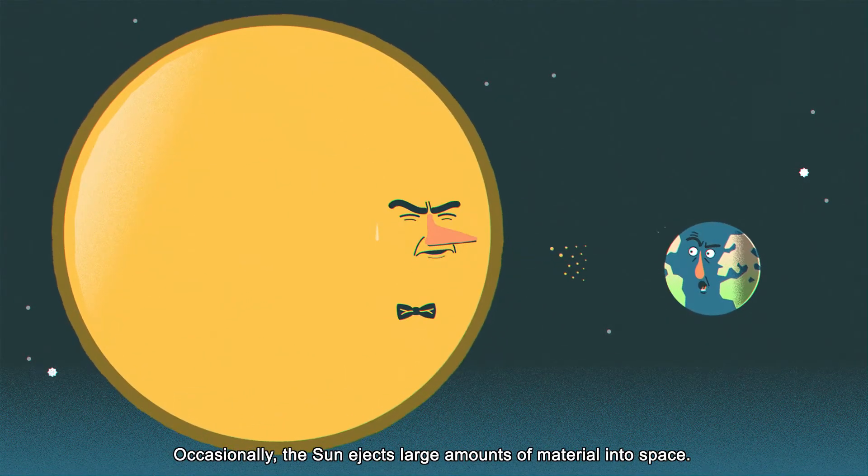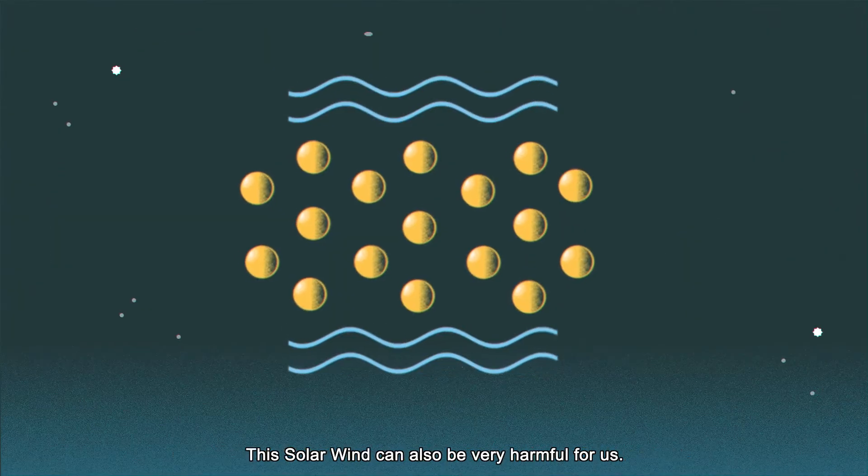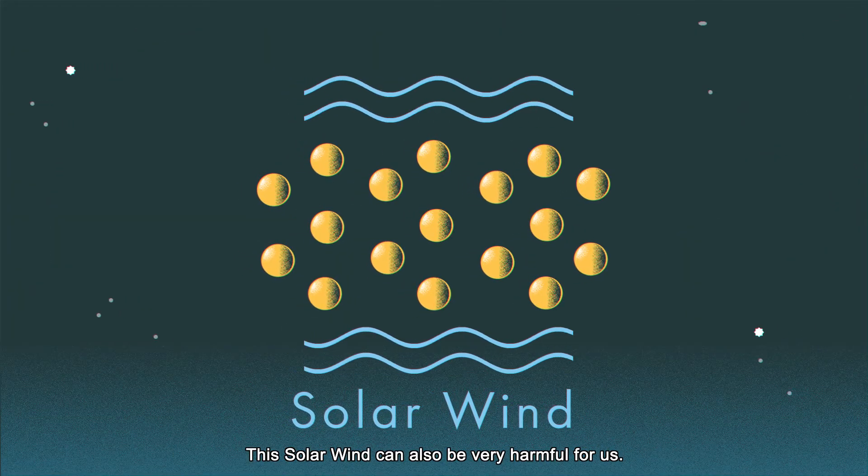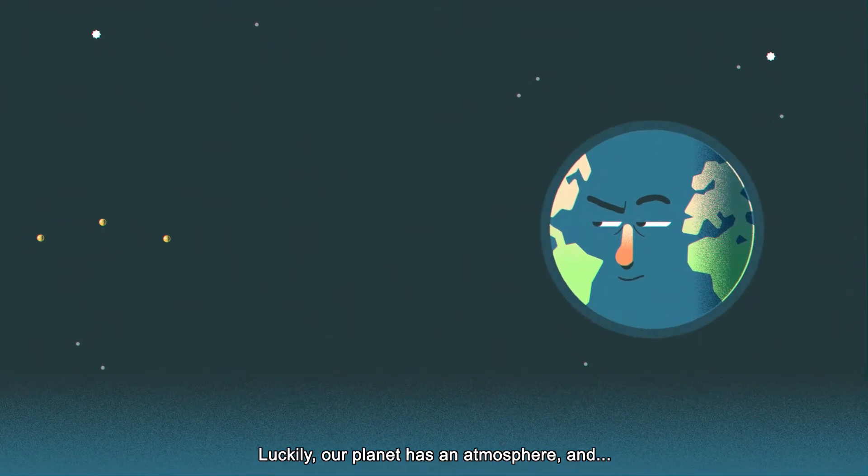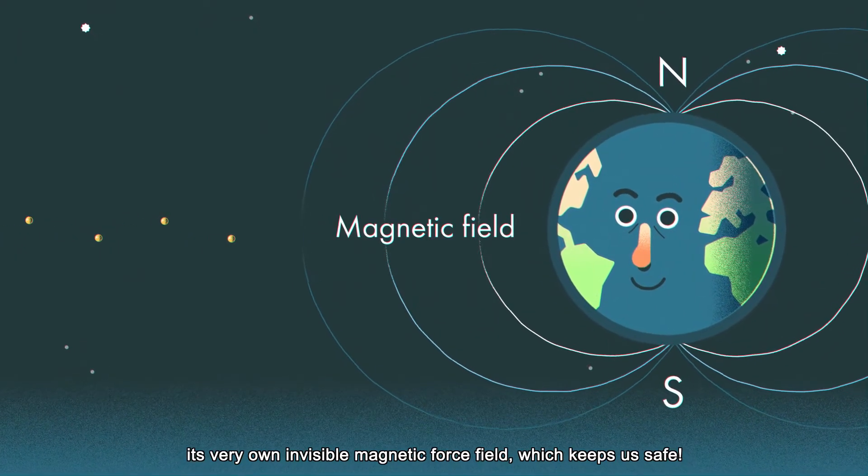Occasionally, the sun ejects large amounts of material into space. This solar wind can also be very harmful for us. Luckily, our planet has an atmosphere and its very own invisible magnetic force field, which keeps us safe.